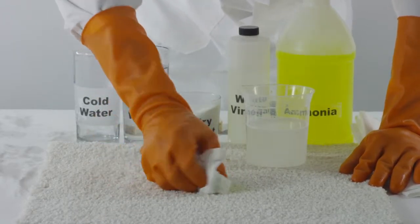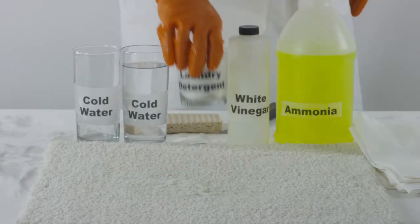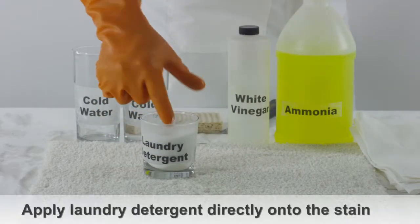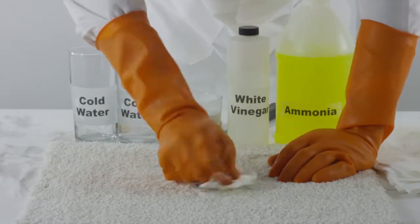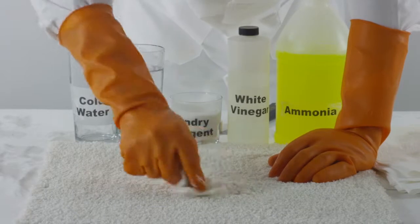It should begin to disappear. Another method is vacuum as much of the grass stain as possible, and apply a bit of laundry detergent directly onto the stain. Put pressure on the stain to remove as much of the green coloring as possible.